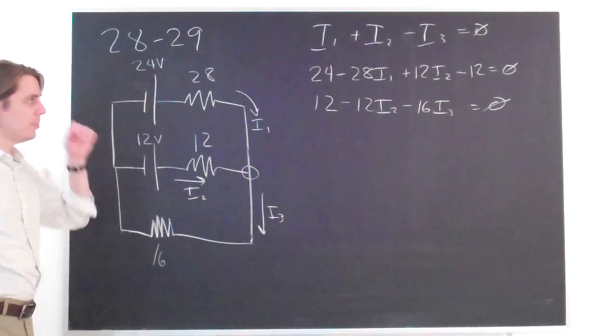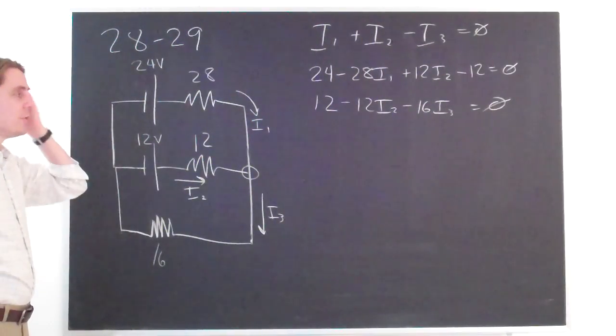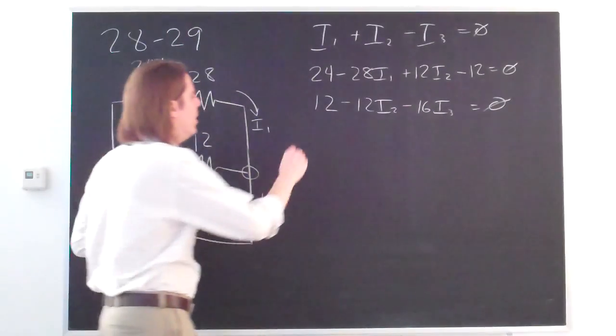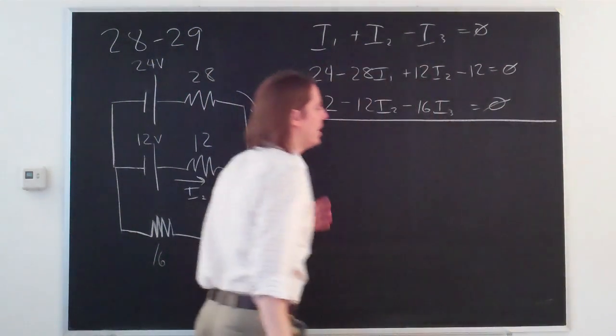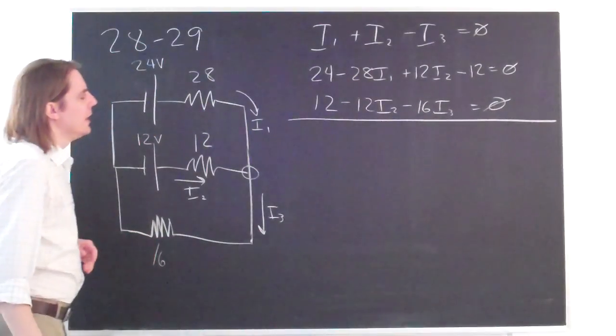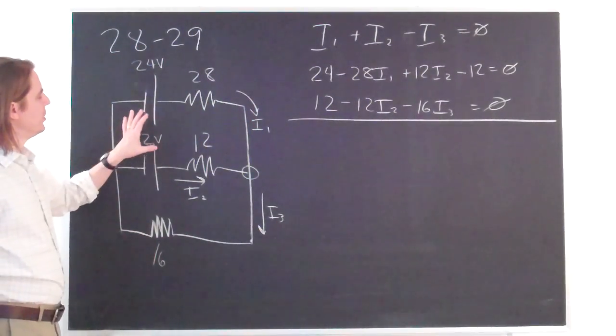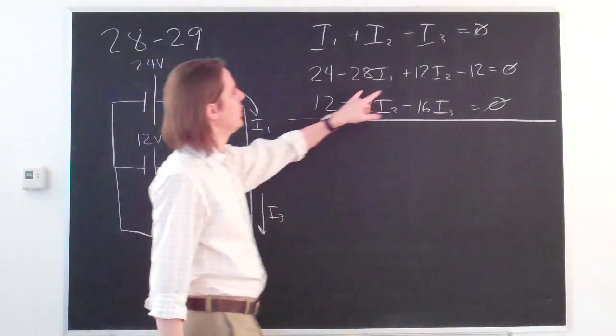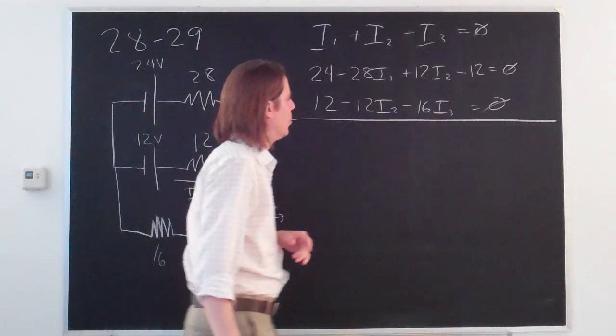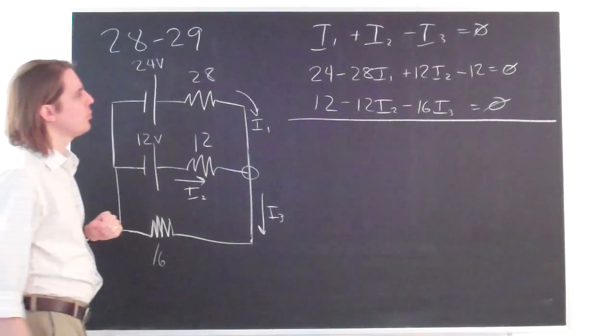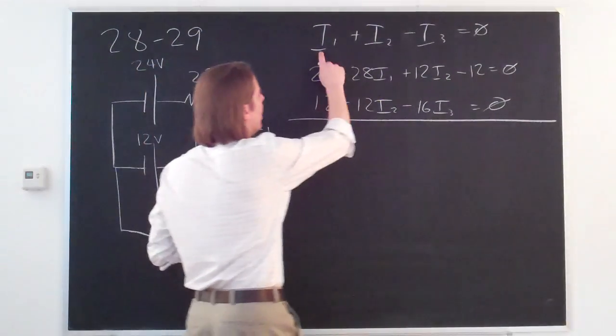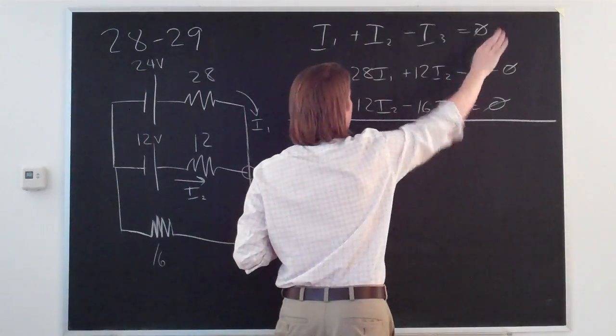So we have a system of three equations and three unknowns. And like I showed you in class, there is sort of a way to systematically solve these without having to master linear algebra. And the reason it often works with Kirchhoff is we usually have some zeros in these equations. This one has no I3. This one has no I1. So I'm going to show you the systematic way to do it. First we write the equations in terms of their I1, I2, I3 and put the constants on that side.